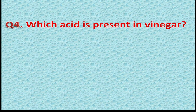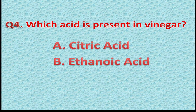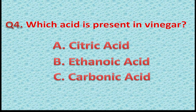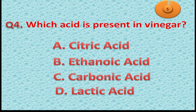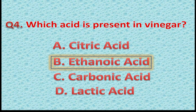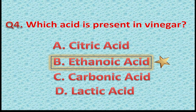Question 4: Which acid is present in vinegar? Option A: Citric acid. Option B: Ethanoic acid. Option C: Carbonic acid. Option D: Lactic acid. The correct answer is Option B — Ethanoic acid, which is also known as acetic acid. If you chose this option, add 1 star to your score. If not, do not add any point.